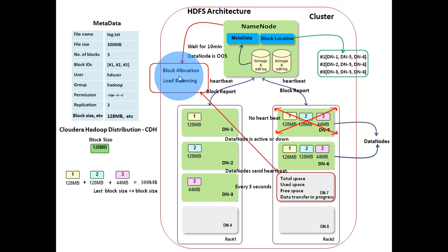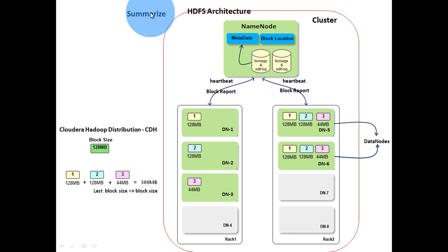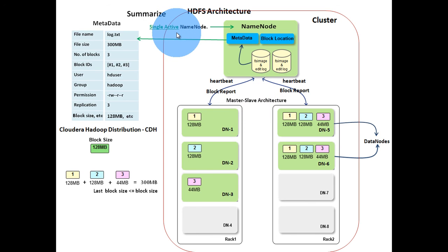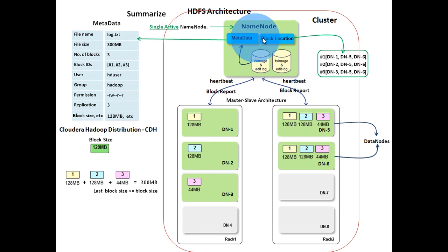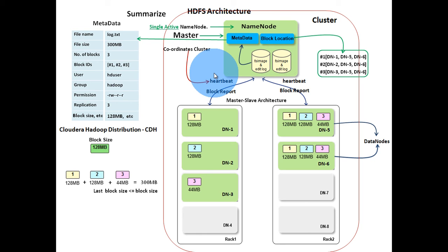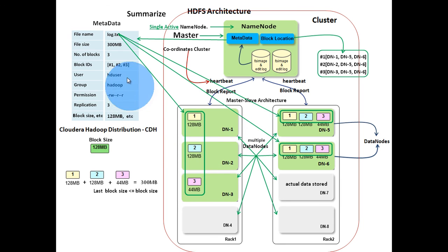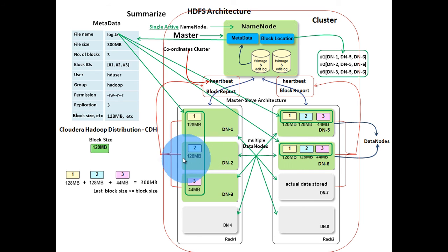That was all about HDFS architecture. To summarize: HDFS is a master-slave architecture with a single active name node that contains metadata and block location, managing the file system and handling coordination using heartbeats — it is the master of the cluster. HDFS has multiple data nodes where actual data is stored. Files are divided into blocks and blocks are replicated in different data nodes. Data nodes send heartbeats and block reports to the name node.